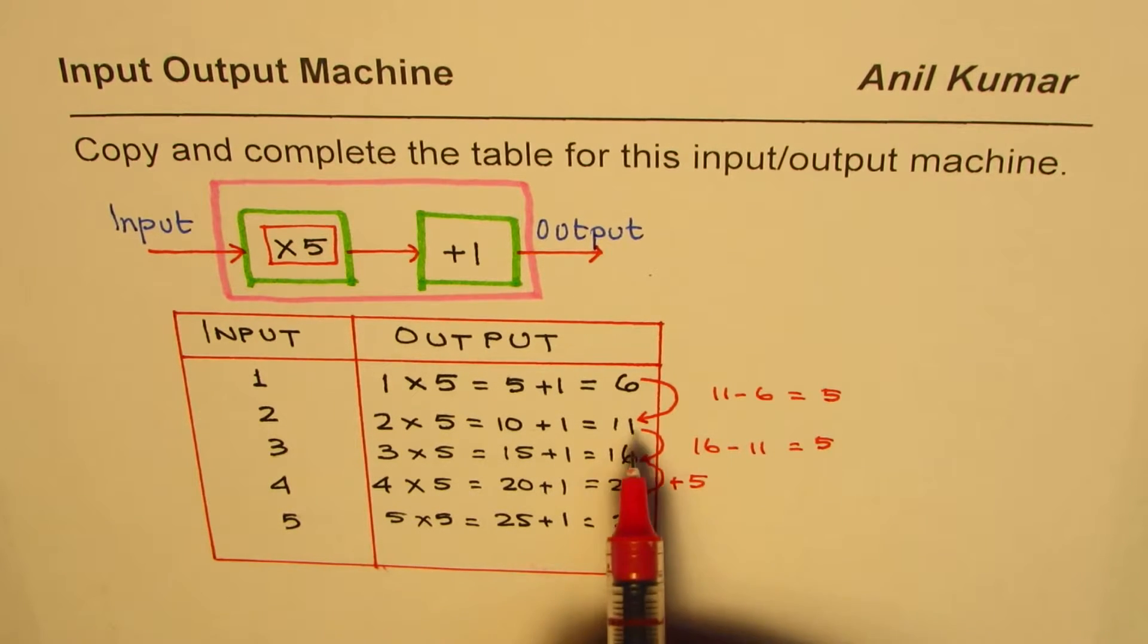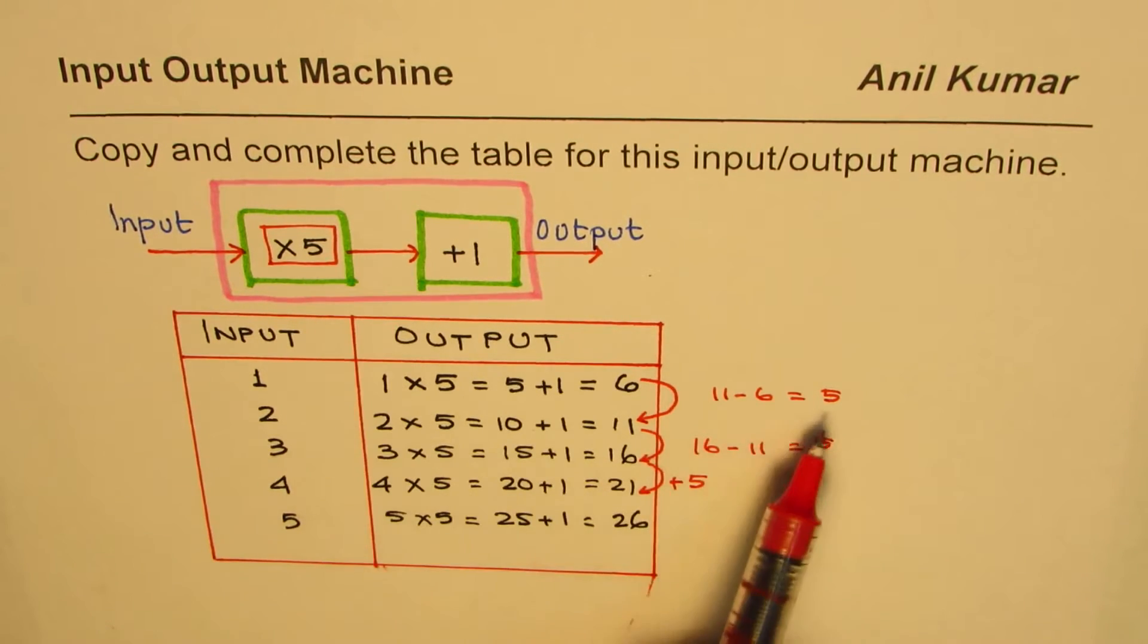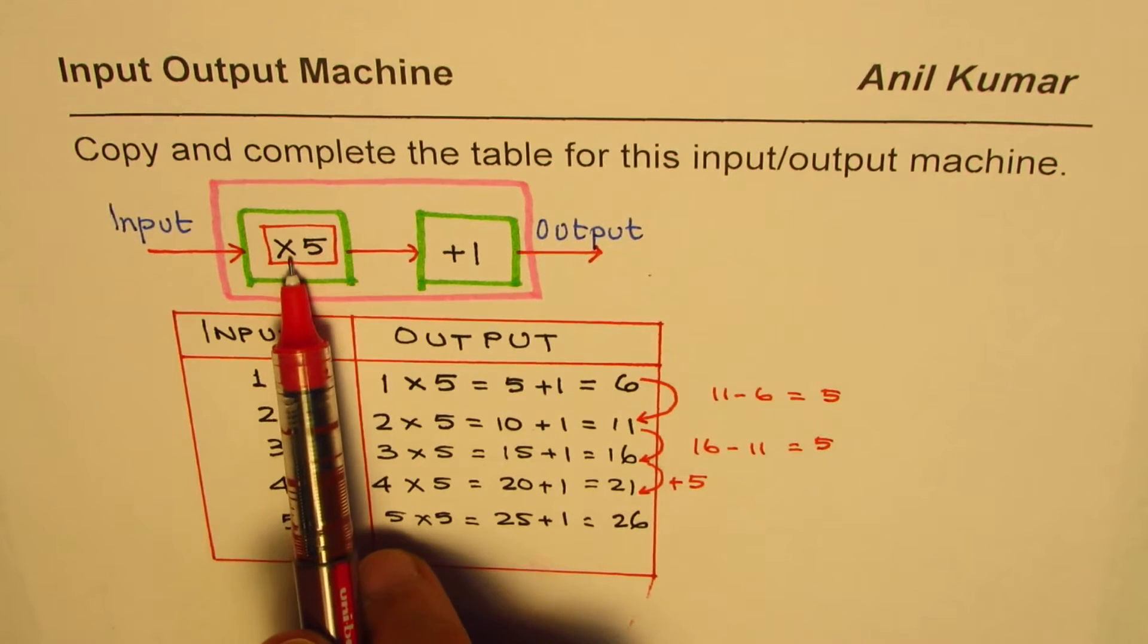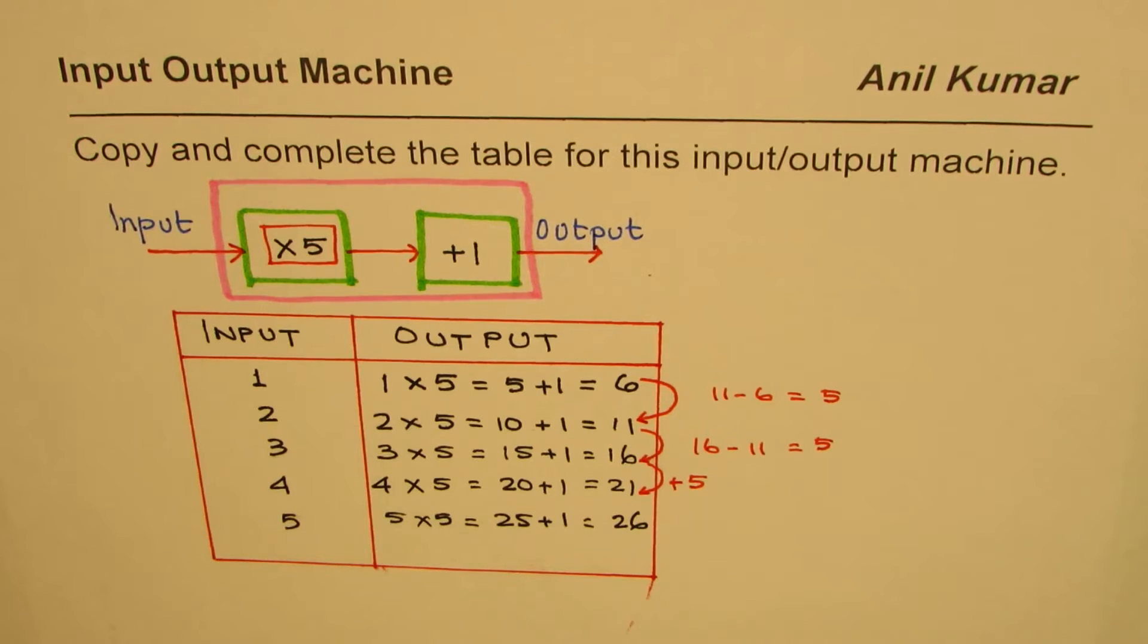When you want to write a formula for a recursive pattern, start at 6, add 5. Then in an input-output machine, that add 5 becomes times 5. If you add 5 five times, it becomes times 5.